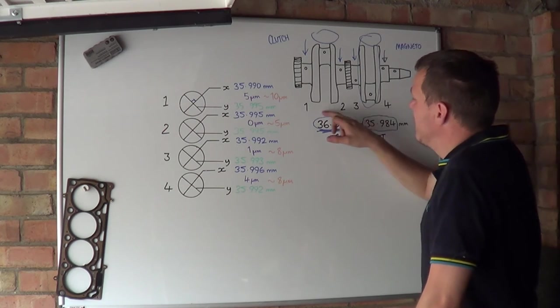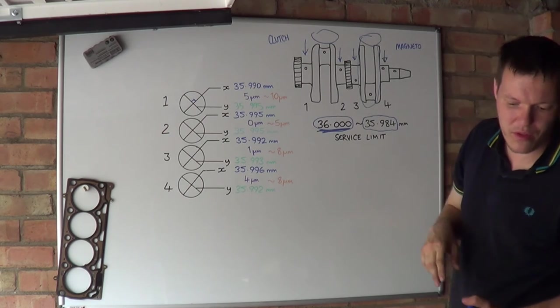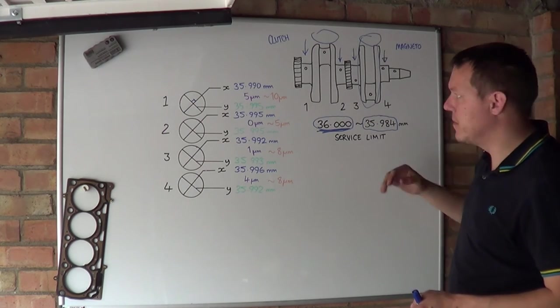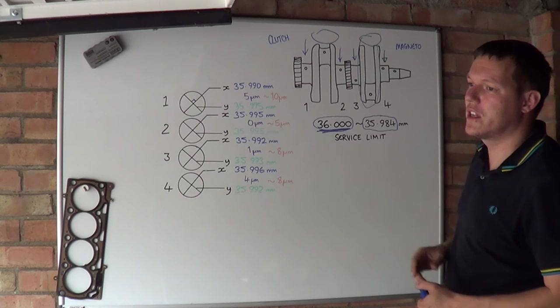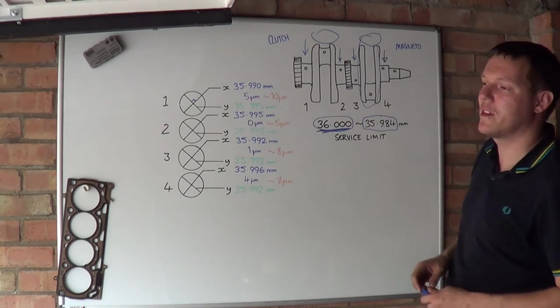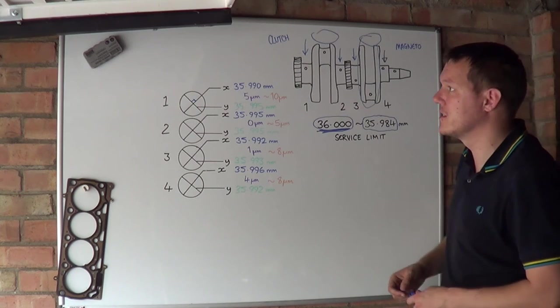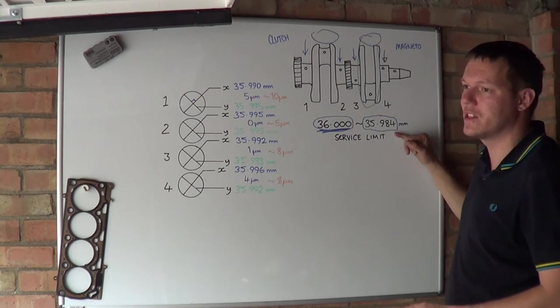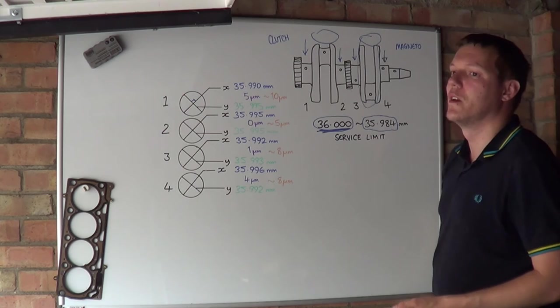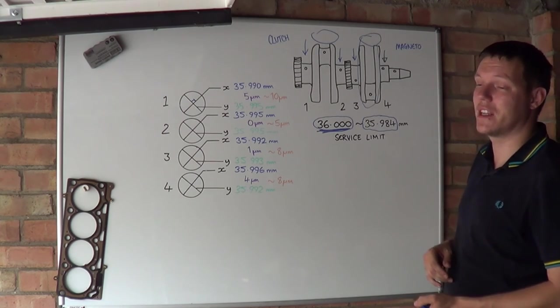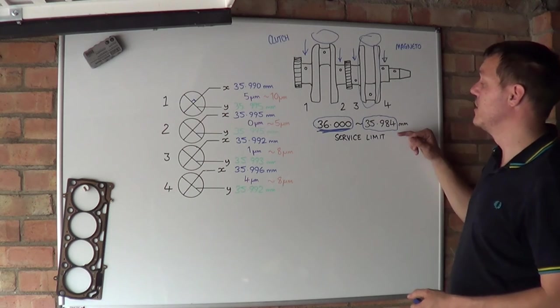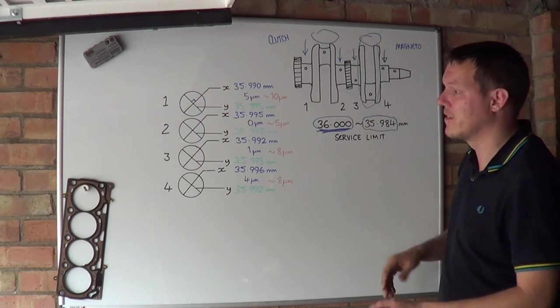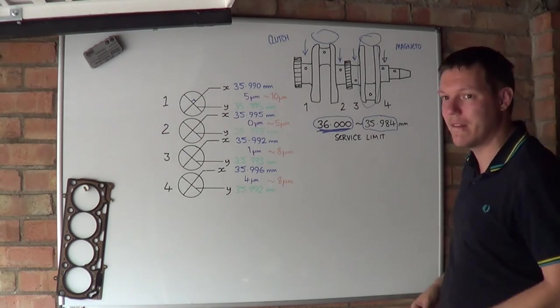And the other thing as well is this service limit, this number here is for the optimum design so the bike is running really nice and efficiently. You can run engines to the fact where they're sloppy. There are engines out there, diesels and stuff that have been running for 250,000 miles. It's not imperative that you have to stick with these numbers. For some components it is, but what I'm saying is if your bike is running fine and you're taking the engine apart just to do a gearbox repair, you measure stuff and you're hovering or you are on this number but the bike was running fine, you don't have to panic and get a new crank or get a re-grind and get some new bearings in.